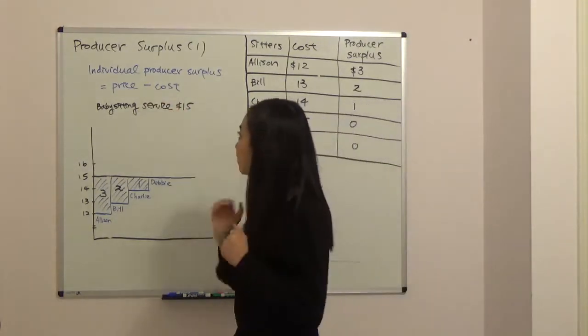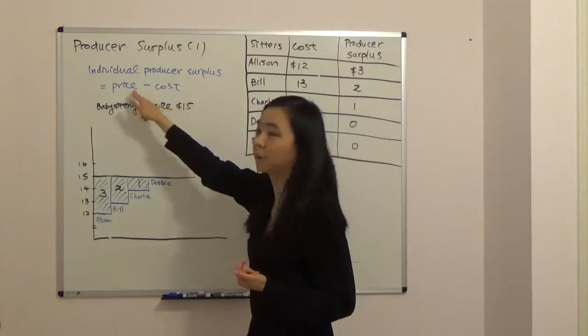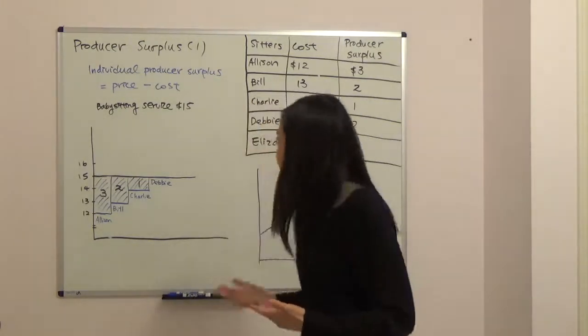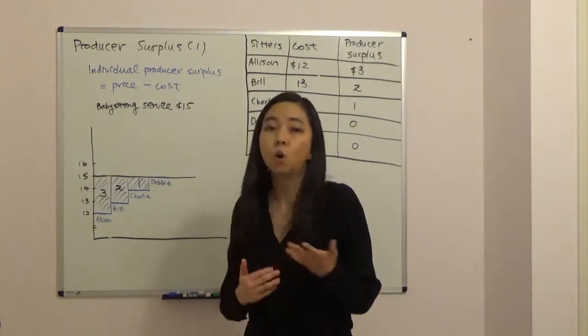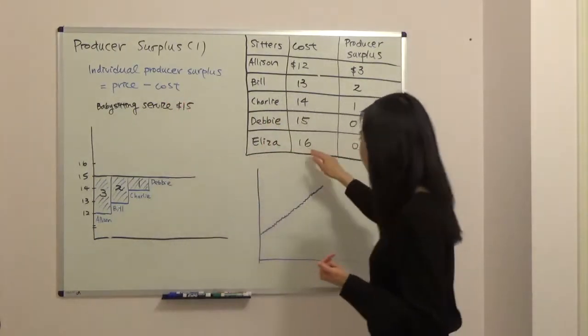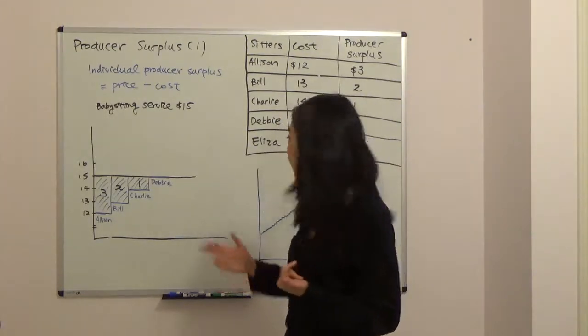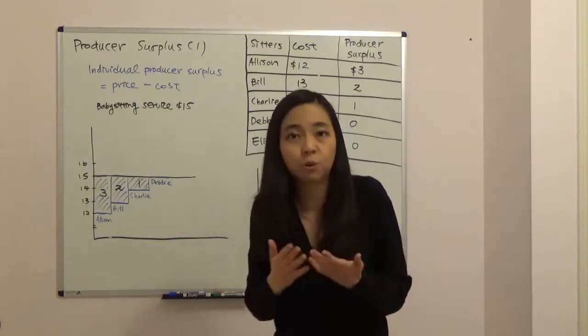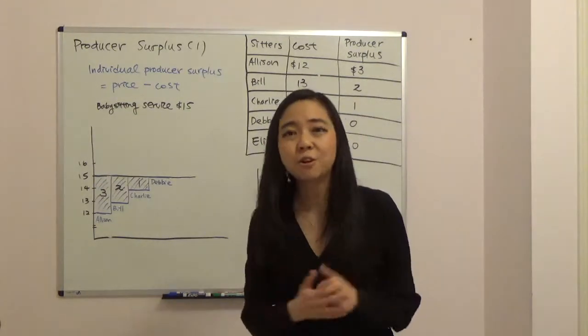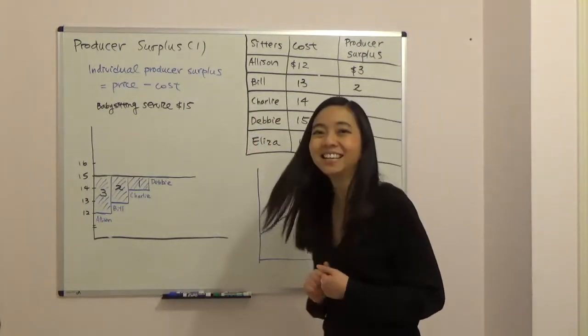We can calculate their individual producer surplus by subtracting cost from the price. Notice that you will only provide this babysitting service if your cost is less than or equal to the price. Otherwise if the cost is too high, for example like Eliza, her cost is $16 and the current price is $15. So Eliza will not enter this market to provide the service and her producer surplus is zero.